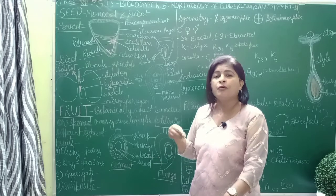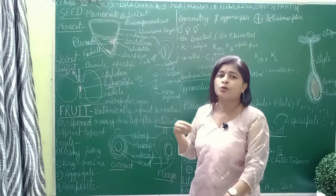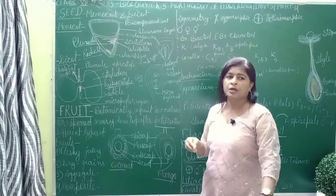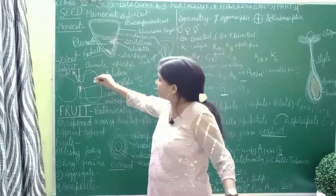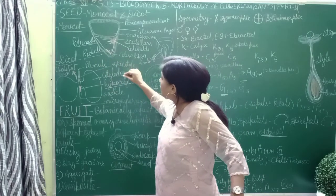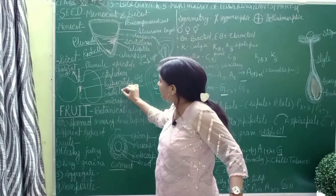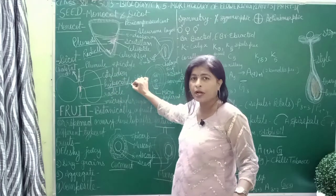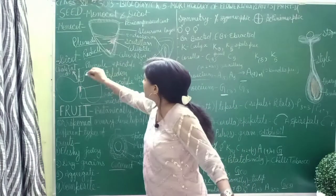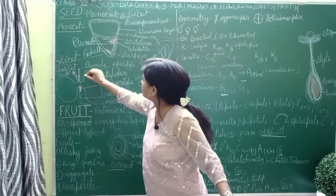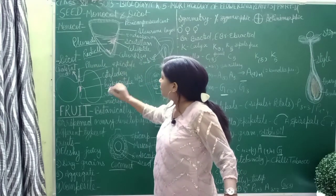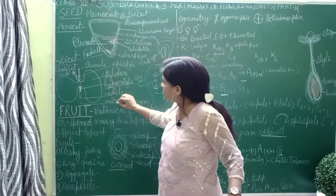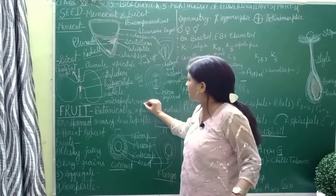Since the radicle is the future root, roots are developed from it. At the tip or apex, the structure present is called the root cap. The plumule or epicotyl is present in the cylindrical region. This structure is the radical and hypocotyl region, and this is the micropylar region.